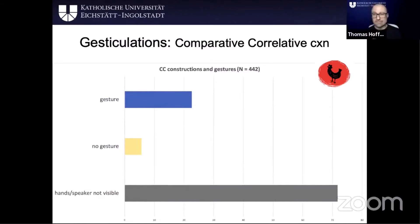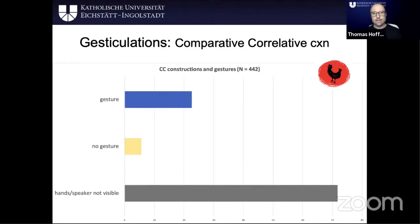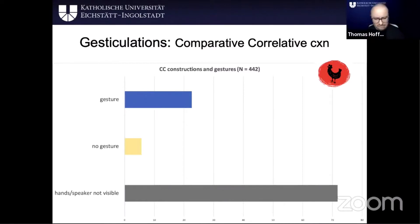Now, in those 442 instances, very often — just like right now you can't see my hands — you didn't see the hands of the speaker because they were below the screen or there was on-screen text blocking the view. But in 100 of those, you could see the gesture or the hands. And in 80% of those there was a gesture, and in 20% there was no gesture. So it's not necessarily the case that there's one multimodal comparative correlative construction stored, but people seem to have the urge to gesture with this construction, and that's already an interesting point for further investigation.